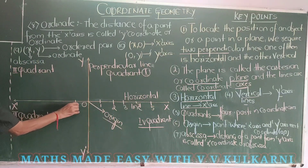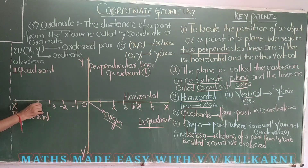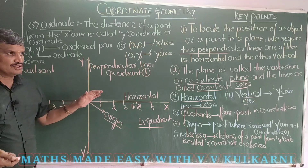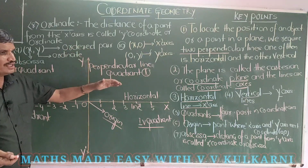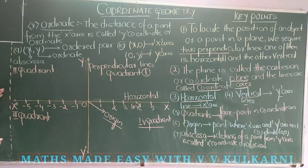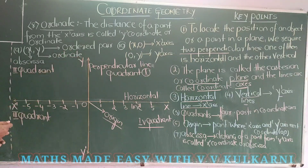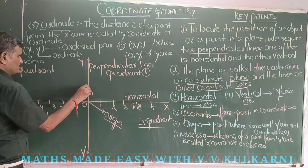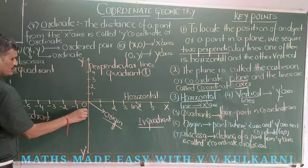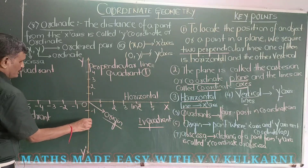So this is quite easy — you have already studied it. On the number line, all numbers on this side are positive and all numbers on that side are negative. Similarly on the Y-axis, all numbers above are positive and all numbers below are negative.